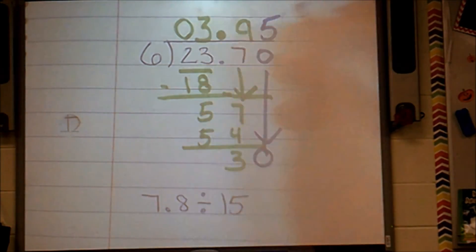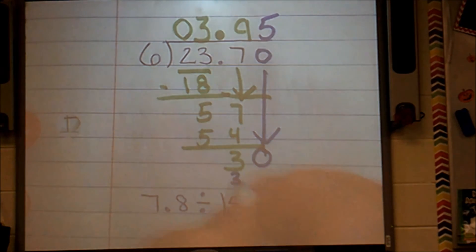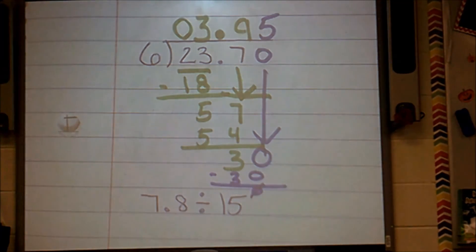And I can say, how many times does six go into thirty? Well, lo and behold, it goes in five times. And that's my final answer, boys and girls, three and ninety-five hundredths. That zero literally saved me. It made it so that I could complete this problem.